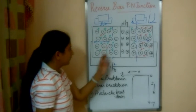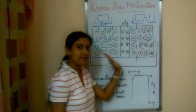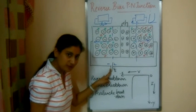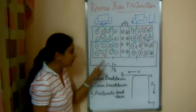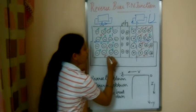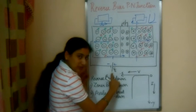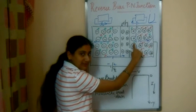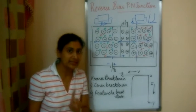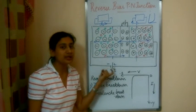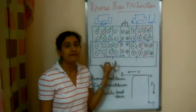But in actuality, what happens? The majority carriers move away from the junction. However, the negative terminal of the battery repels the minority electrons present in the P-type, so these minority carriers move into the junction. Similarly, the positive terminal repels the minority holes in the N-type and these holes try to cross the junction. So we do get a small current in reverse biasing — but it is due to the minority carriers only, and since the concentration of minority carriers is very low, the current in reverse biasing will be very small.